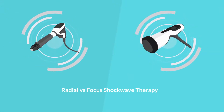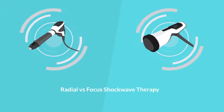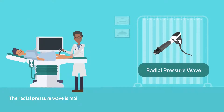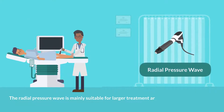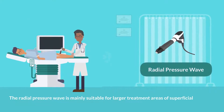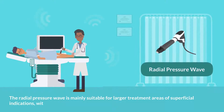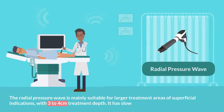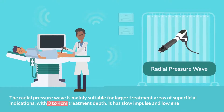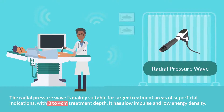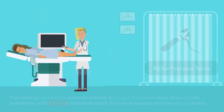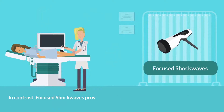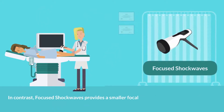The radial pressure wave is mainly suitable for larger treatment areas of superficial indications, with 3 to 4 centimeter treatment depth. It has slow impulse and low energy density.